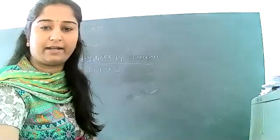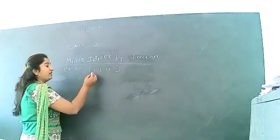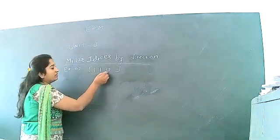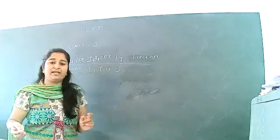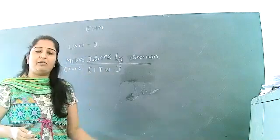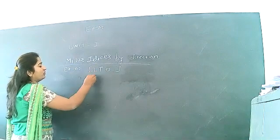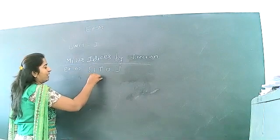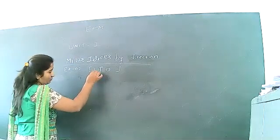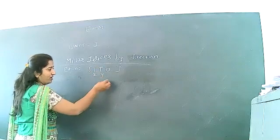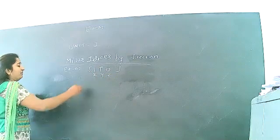Now the second problem on Miller indices by direction is to represent [1, bar1, 0]. Don't be afraid of the bar — it is nothing but the minus sign. We have to draw the negative axis of that respective axis. The x coordinate is 1, y coordinate is minus 1, and z coordinate is 0.